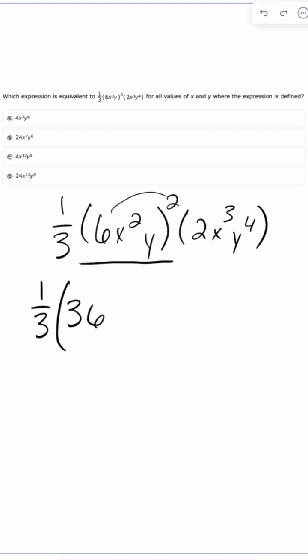6 squared or 6 times 6 is 36. Next we have x squared raised to the power of 2. So x squared squared, if we know our laws of exponents, we know that whenever one exponent is raised to another exponent, we actually multiply those two numbers. So 2 times 2 is 4, so we're going to write x to the fourth power. And then we have y squared, and that's just going to be y squared, y to the second power.